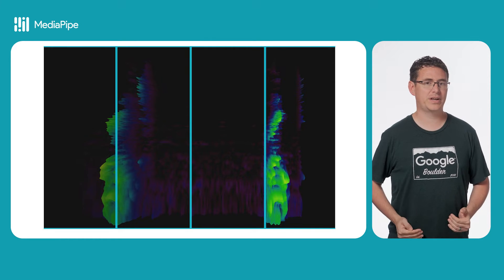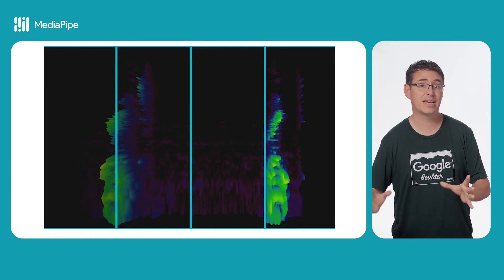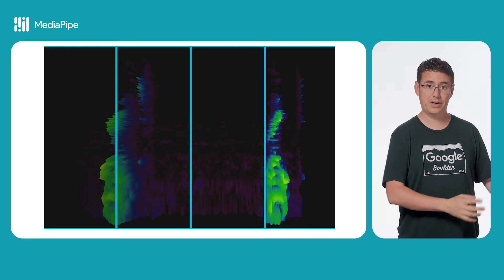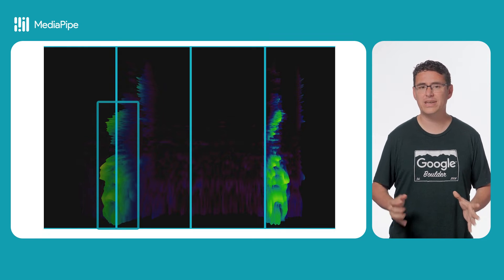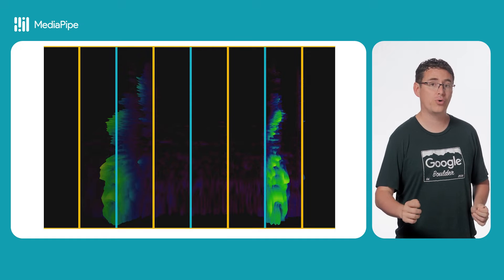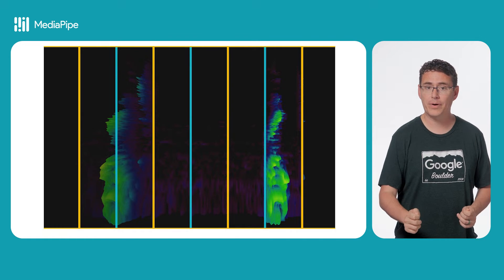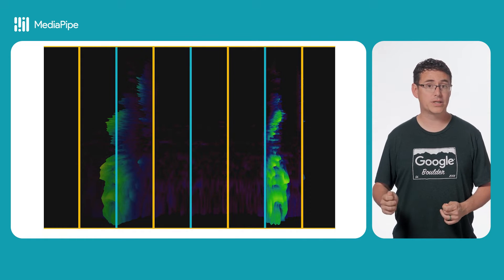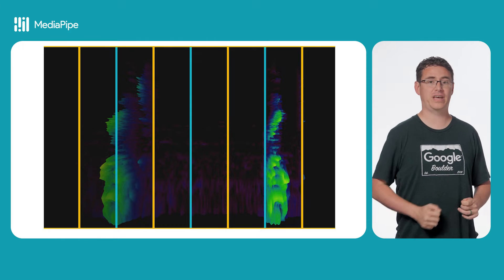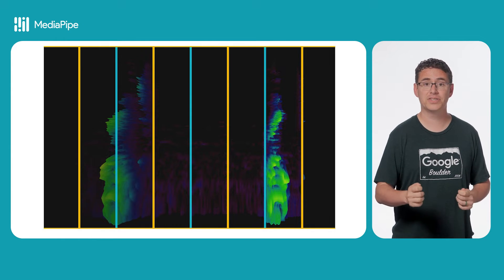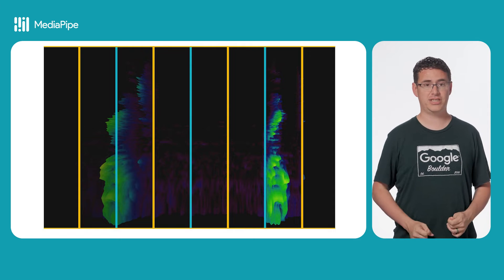But what if the sound we're trying to classify appears across multiple segments rather than cleanly within one? This is actually what we see on the left side of this image. That's where a concept called overlap comes in. Basically, you have two separate classification streams happening at once, but they're offset from each other to try and catch those edge cases. For example, you could have 50% overlap, meaning the second set of segments will start from the middle of the first set, and they'll have a way better chance of finding sounds that are missed by the first classification stream.